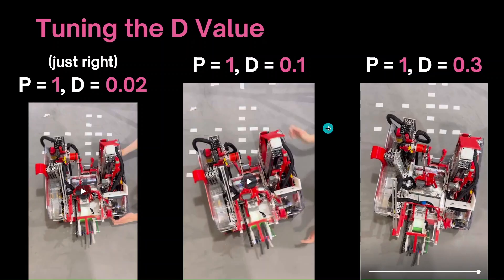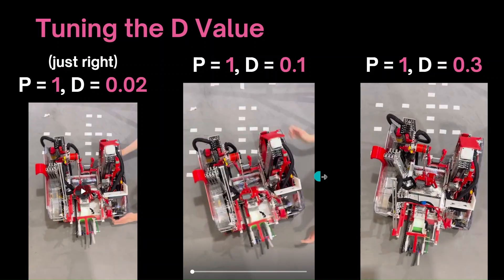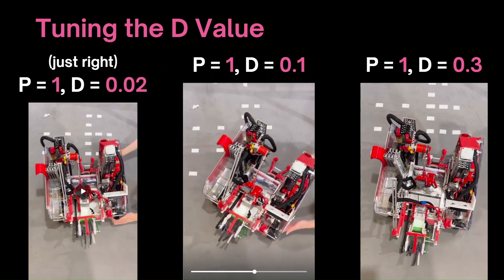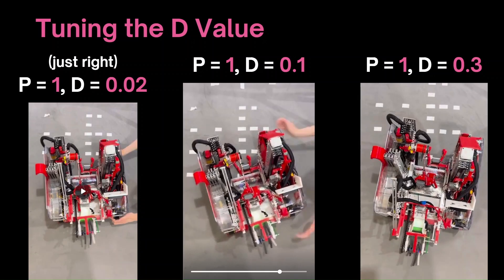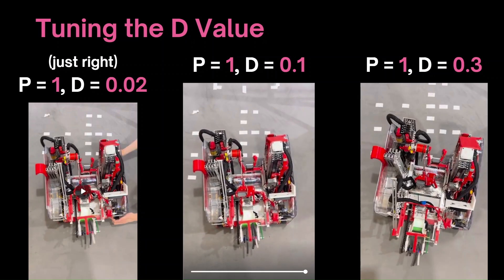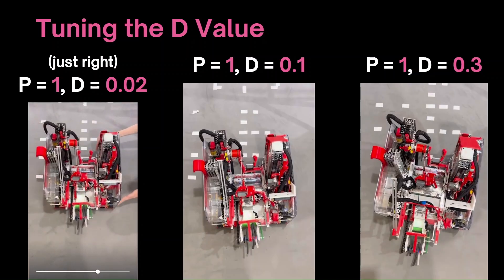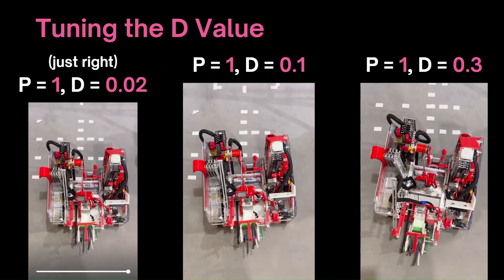So if we try decreasing the D-value from 0.3 to 0.1, if it's still too high — we can tell from this because the robot corrects back a little bit weakly, meaning the D-value is dampening the P-value's control a bit too much — we'll tune this back and forth to find the sweet spot. This value turned out to be 0.02 for my robot, and this allowed the robot to turn back to its original heading with no overshoot.